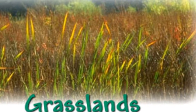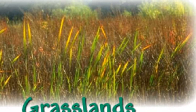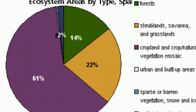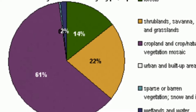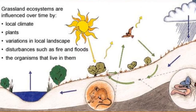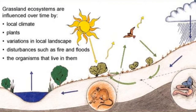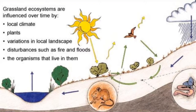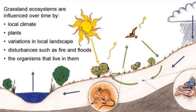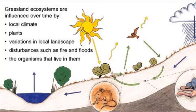An ecosystem is a community of living and non-living organisms, and the grassland is an ecosystem. Grassland ecosystems are influenced over time by local climate, the different types of plants in the local landscape, disturbances such as fire and flood, and the organisms that live in them.